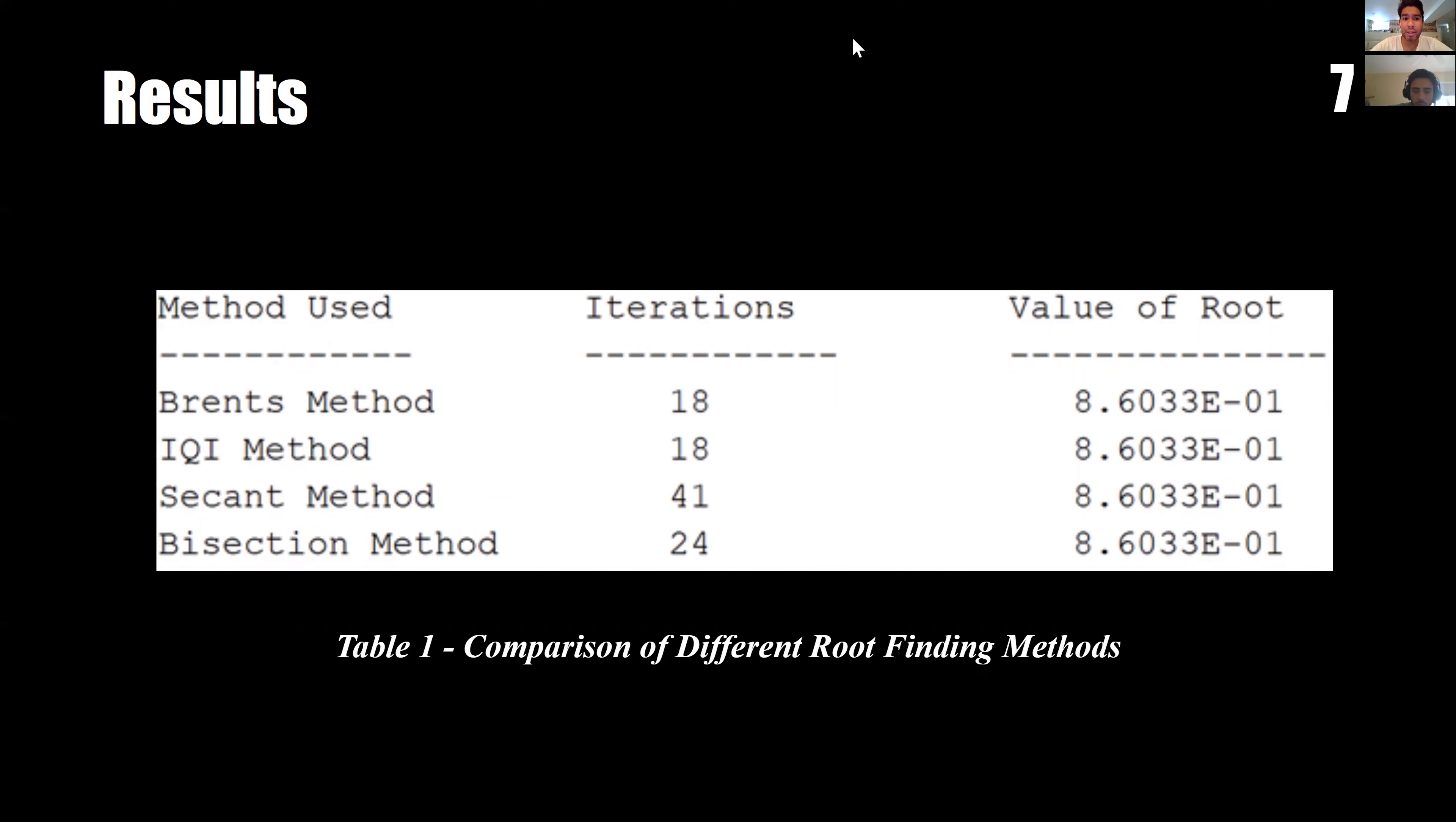In the results section, we found in the command window the four listed methods we used for this particular project: Brent's method, IQI, secant, and bisection. We see how they all converge at the same value of the root, which corresponds to 0.86033.